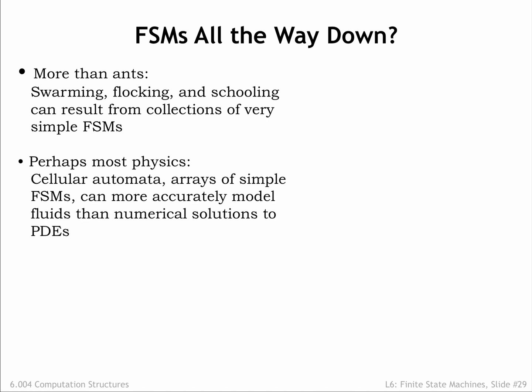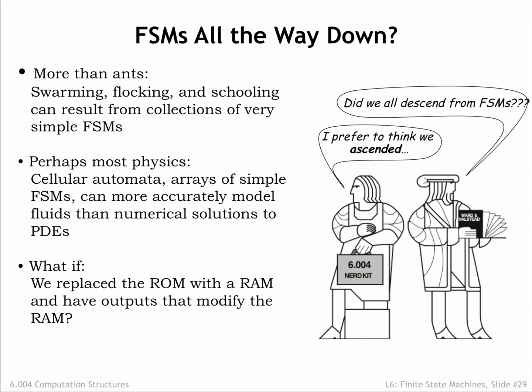Physical behaviors that arise from simple interactions between component molecules can sometimes be more easily modeled using cellular automata than by trying to solve the partial differential equations that model the constraints on the molecule's behavior. And here's an idea! What if we allowed the FSM to modify its own transition table? Hmm, maybe that's a plausible model for evolution!